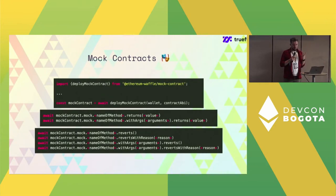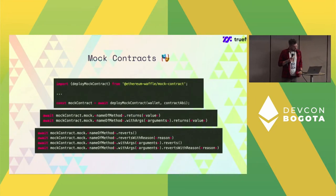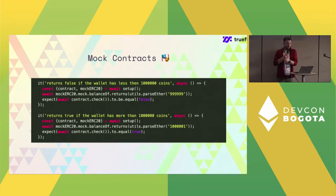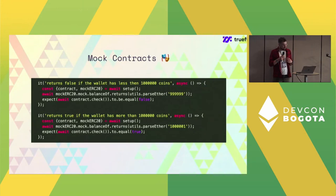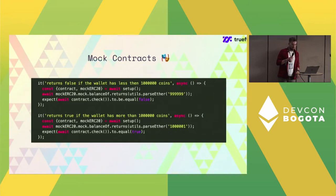Mock contracts are artificial things that pretend to be smart contracts. We can set up and deploy a mock contract and very easily define its behavior — basically say that when a particular method on the mock is called, it will behave in a certain way: return something or revert, with specified arguments. An example usage: we have a setup returning a contract and a mock ERC20, we program the mock to return some value, and then check whether our contract correctly reacts — returning false or true depending on what the mock returns.